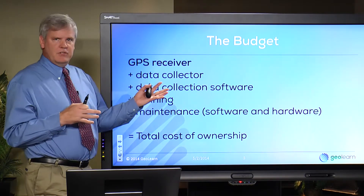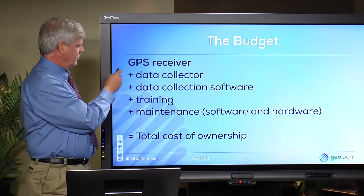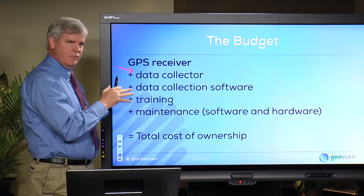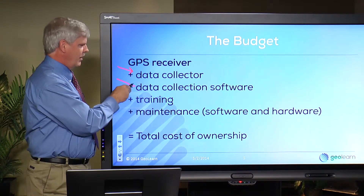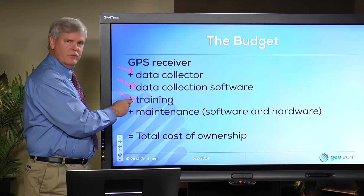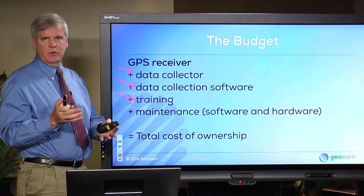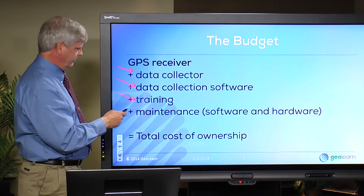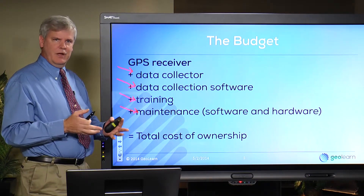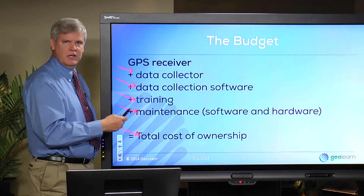When you look at the budget, here's a budget summary. There's typically a data collector involved, though it doesn't have to be. There's software to collect the data, training which is usually provided by the dealer or someone like GeoLearn or another organization, and maintenance for software and hardware which varies among manufacturers. All of that equals the total cost of ownership.